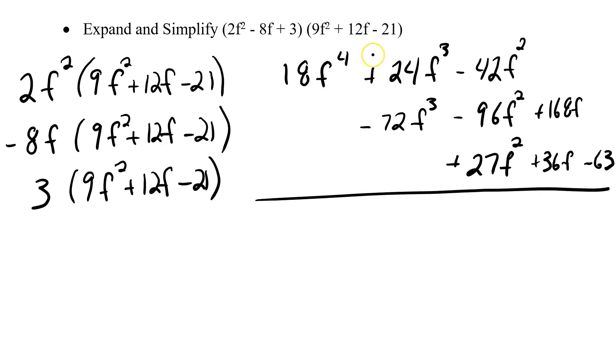Okay, last step is to combine. No other f to the fourths, so I get 18f to the fourth. Positive 24f to the third minus 72f to the third gives me negative 52f to the third. And here's my most difficult one. Negative 42f squared minus 96f squared plus 27f squared. Combine all three of those numbers, I get negative 111f squared. 168f plus 36f gives me positive 204f. And then finally, my negative 63 doesn't combine with anything else, so minus 63. So when combined, I get 18f to the fourth minus 52f to the third minus 111f squared plus 204f minus 63.